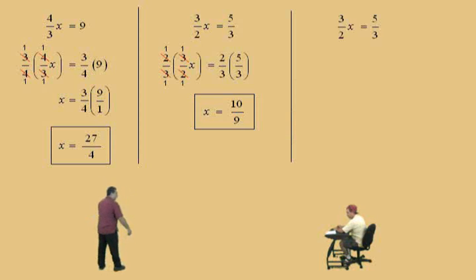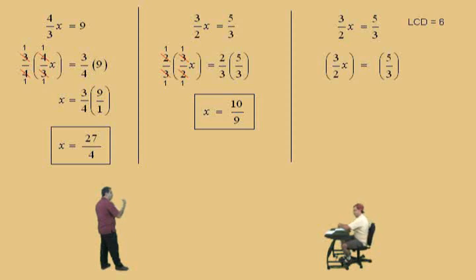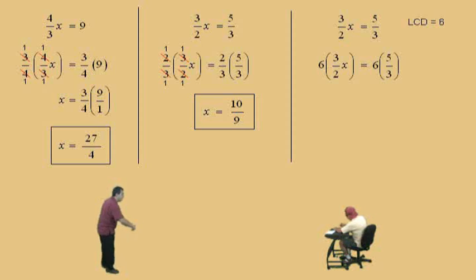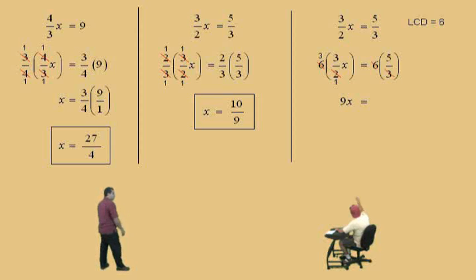Here we go, Charlie. 3 halves x equals 5 thirds. What's the LCD for both fractions? 6. It's 6, that's right. So here we're going to multiply both sides by 6. Now we use our kung-fu approach, Charlie. 2 goes into 6? 3 times. And 3 times 3? 9 — but it's 9x. On the right-hand side, 3 goes into 6? 2 times. And 2 times 5? 10. There we go.